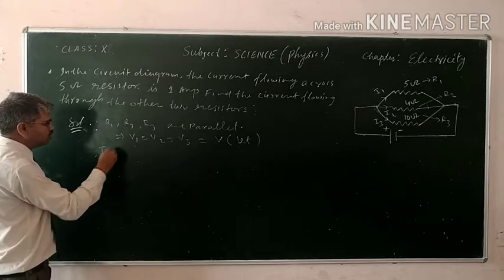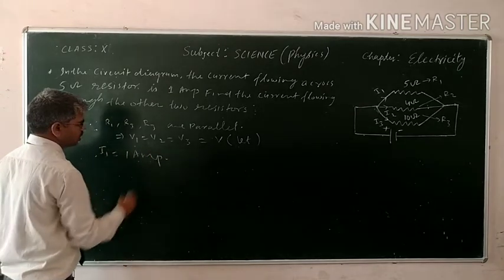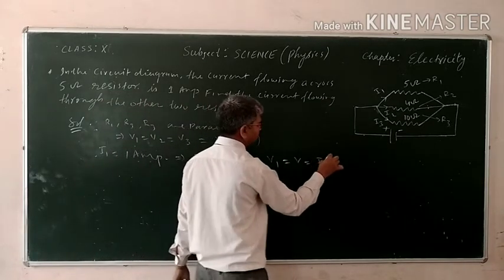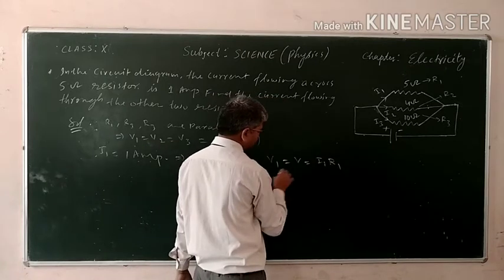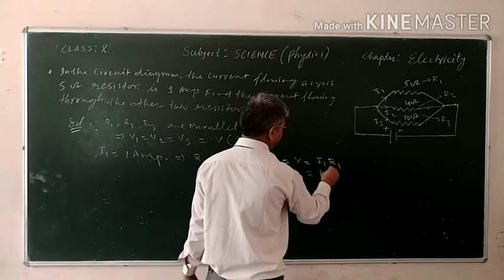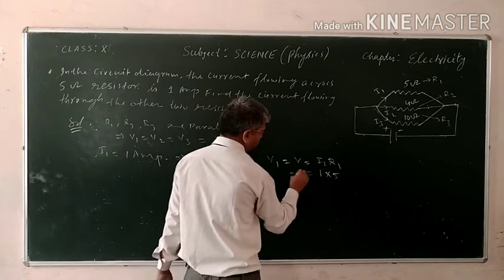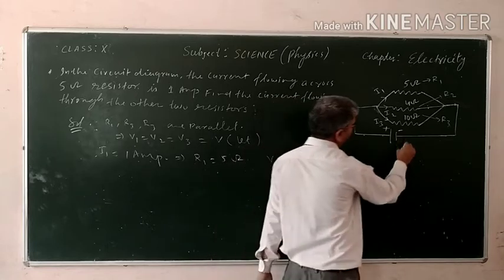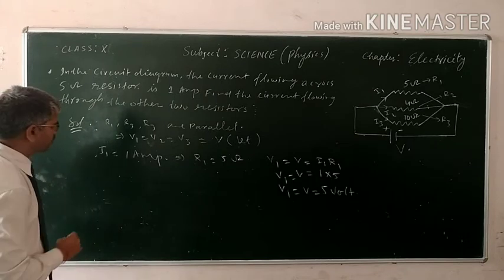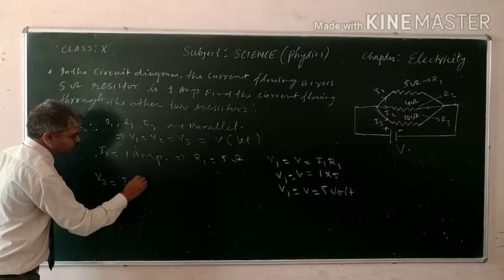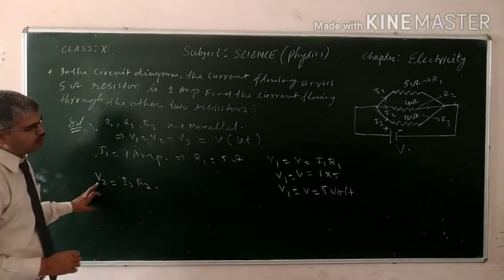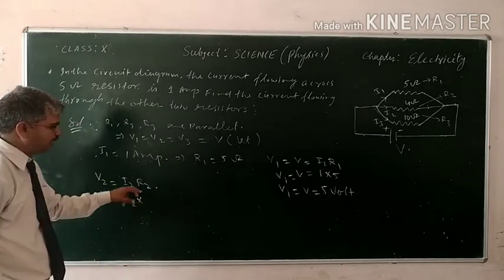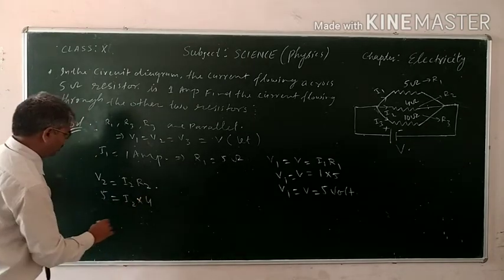So first I talk about first resistor. I1 is equal to V1 upon R1, so what about V1? V1 is equal to I3 times R3. So V1 is equal to 1 times 5, which is 5V. This is for all. So now I talk about V2. V2 is equal to I2 times R2. What is the value of V2? V2 is equal to V1, that is 5V. And I2 you have to calculate, and R2 that is 4 ohm.